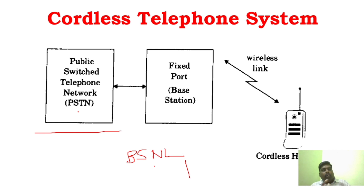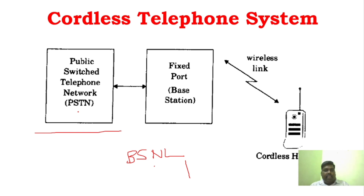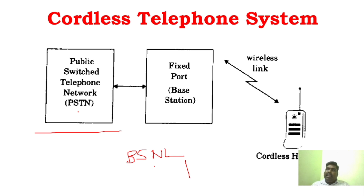The second generation will have a pager. If you want to send a message via pager, you can call the admin and send a message. There are limitations in second generation - a limit of about 10 meters. After that, only mobile communication - wherever we go, we can speak. We have a lot of handoff techniques and capacity increase in sophisticated cellular systems.